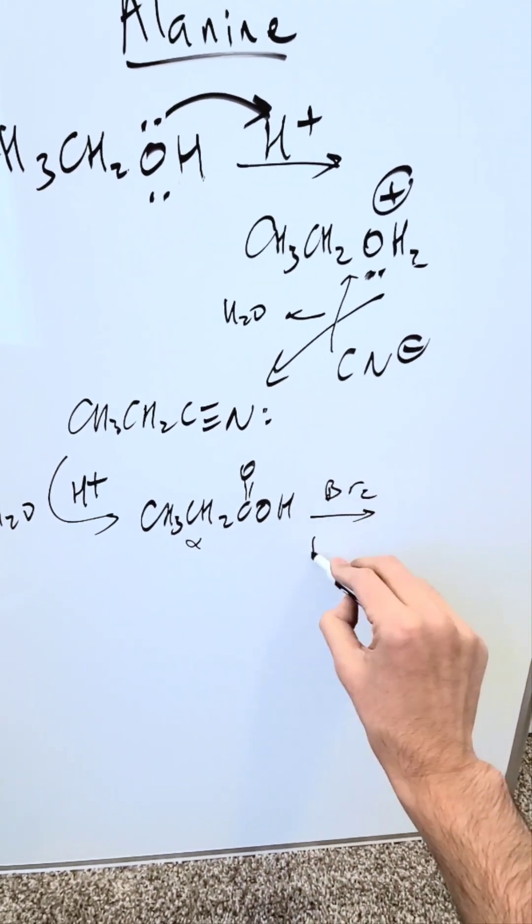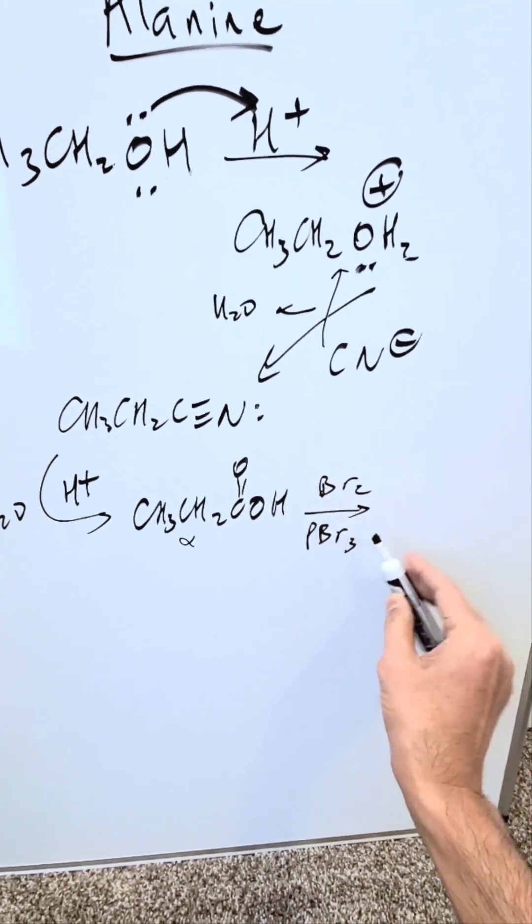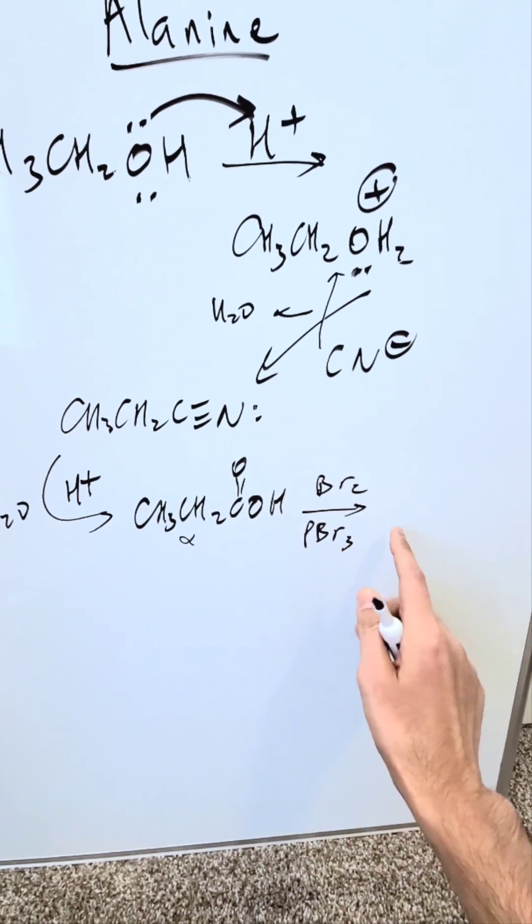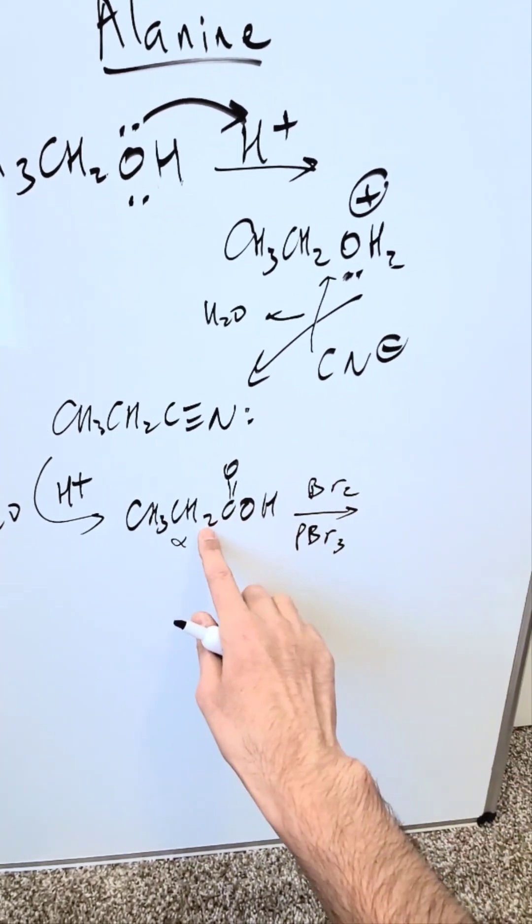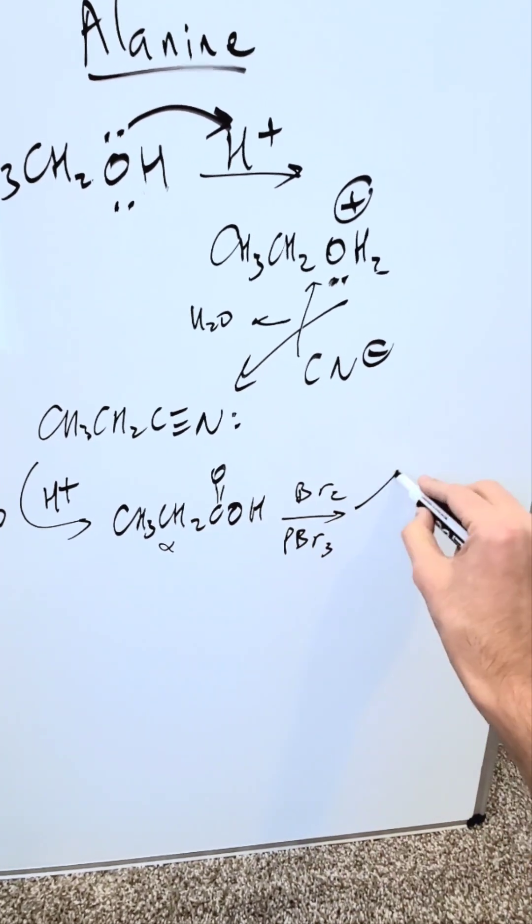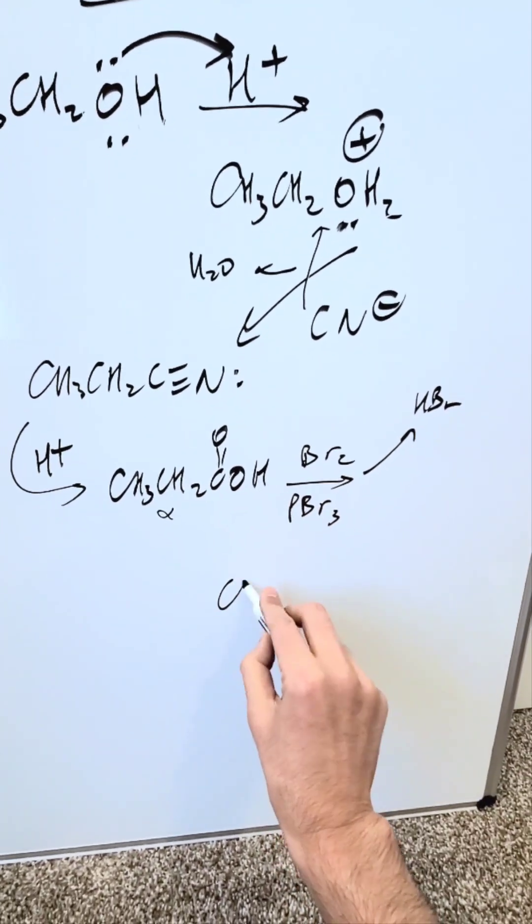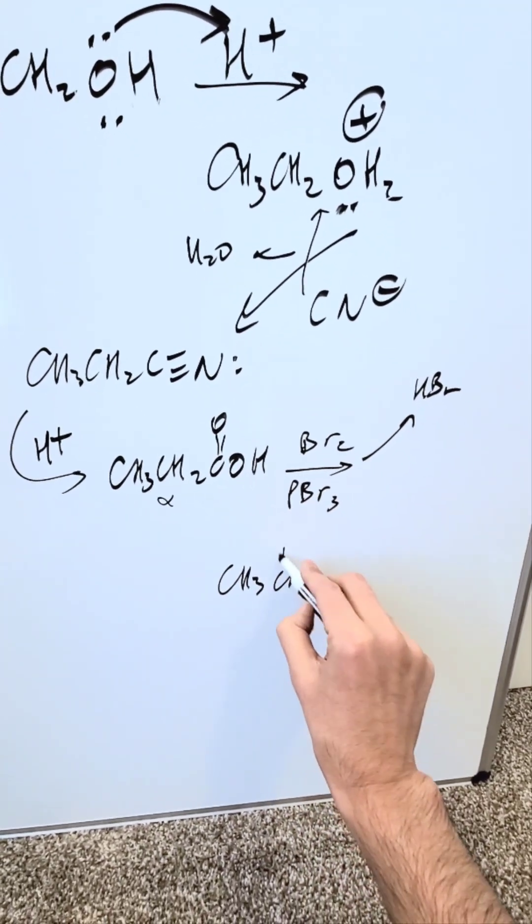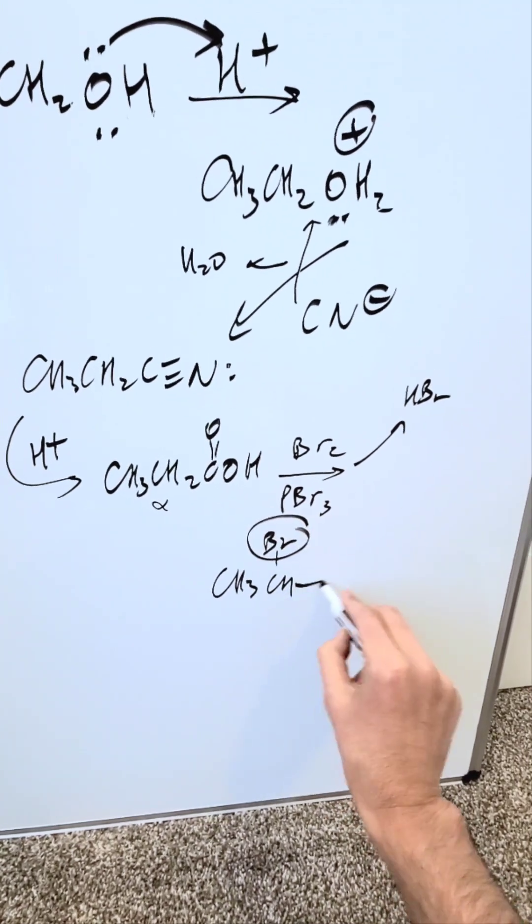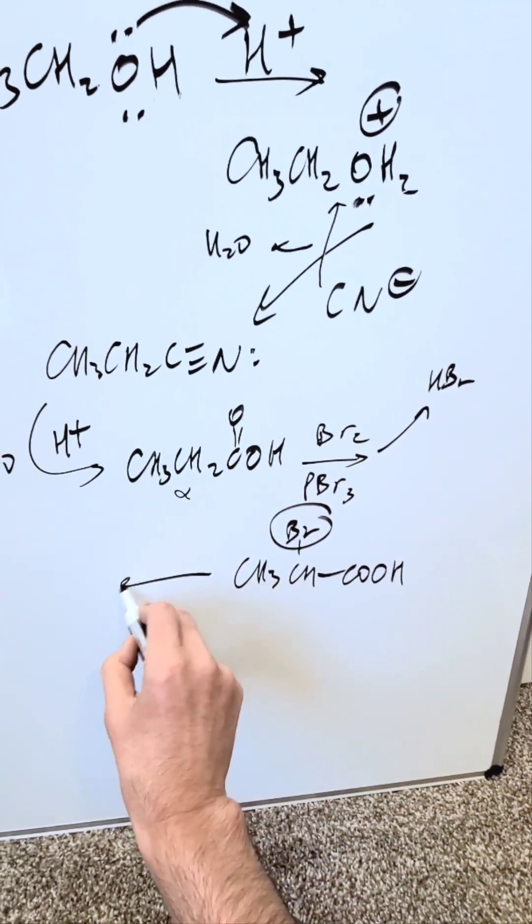I'll do Br2, phosphorus tribromide, a small amount. A byproduct will be - one of these bromines will attack with that hydrogen, you'll have HBr. But the other bromine will add right here to your alpha carbon to give you CH3-CHBr. This is what I want, and then obviously your carboxyl functionality.